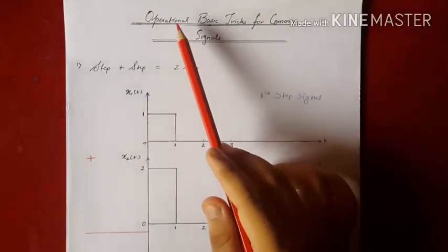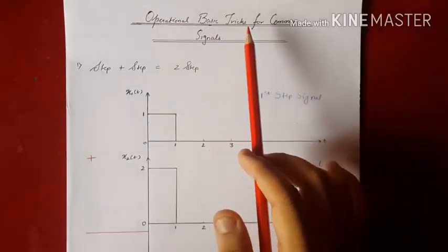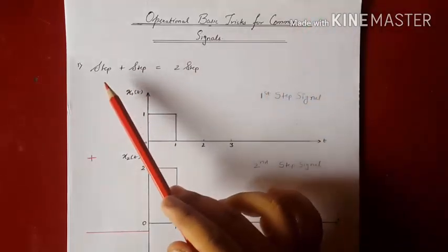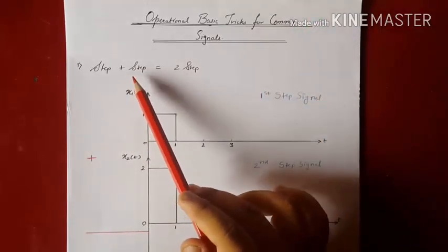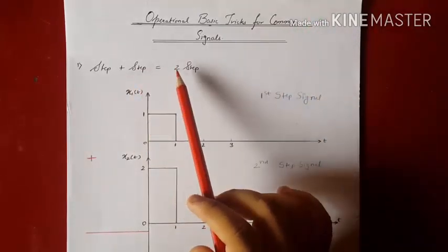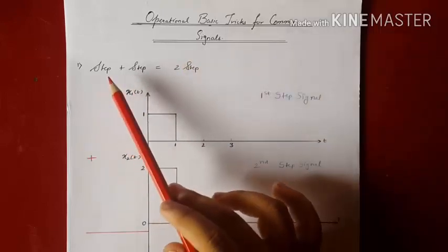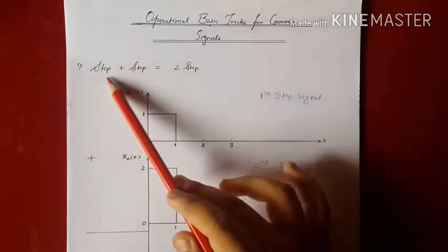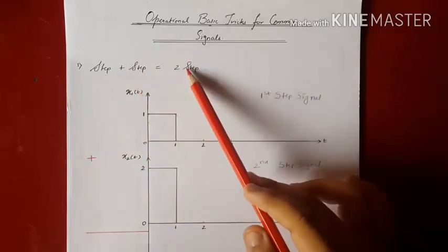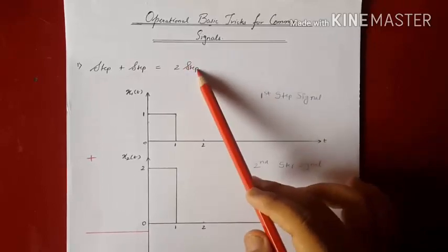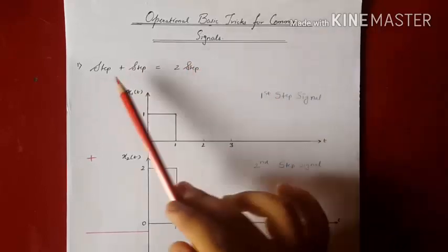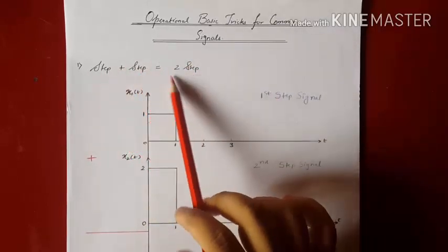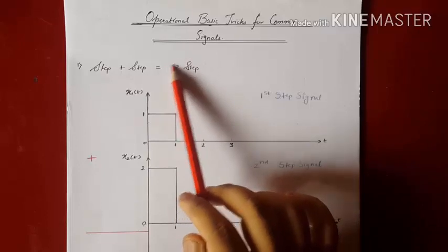Today we are going to see some operational basic tricks for common signals. The first trick: step plus step will give me two steps. This means that addition of step signals will result in a step signal, and the amplitudes of the parent signals will be added, as shown here.